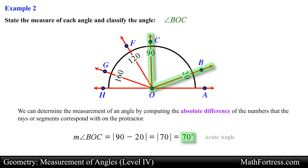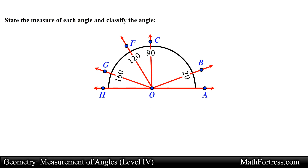So angle BOC can be classified as an acute angle. Next, angle GOH. Similar to the previous problem, let's locate the sides of angle GOH. Notice that ray OH is located at the 180 degree mark since it is aligned on the straight edge of the protractor.